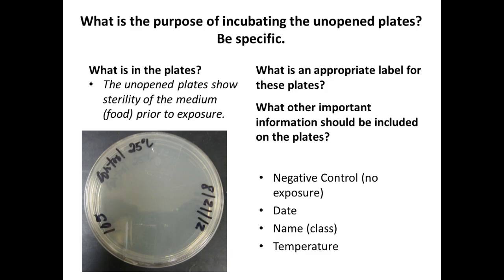Always label on the bottom of the plate, because that's where the food is. I could easily switch lids on you. We want labels where the organisms are going to grow, and they grow where the food is — in the bottom of the plate. Typically you write along the edge so that you can easily see what grows.